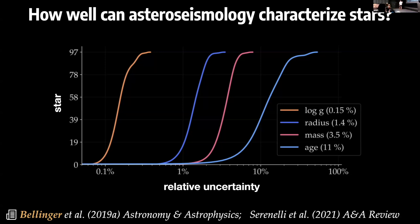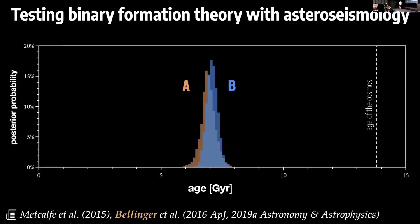These ages are driving a revolution throughout many different fields of astronomy. One quick example: we see lots of stars in binary systems. If we're able to resolve the oscillation modes in each of them, we can test the hypothesis that these stars were born at the same time. By running each component of the binary through our machinery, we can measure the ages of these stars. We find that yes, most likely these stars did form at the same time — a beautiful verification of that idea.